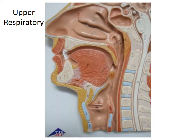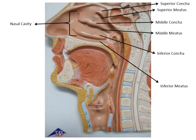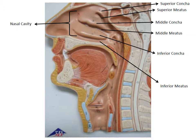To start, we're going to look at our half-head model, which is going to show various structures. The first thing we're going to look at is this entire area which is called the nasal cavity. Everybody knows what the nasal cavity is — we've all probably explored that at one point or another.